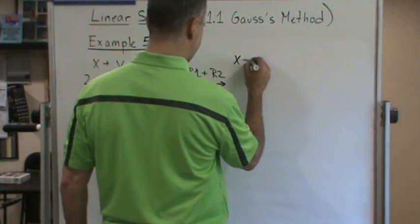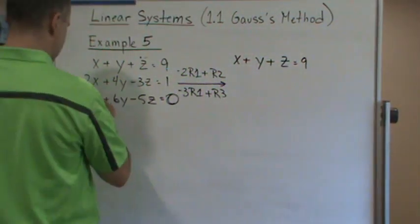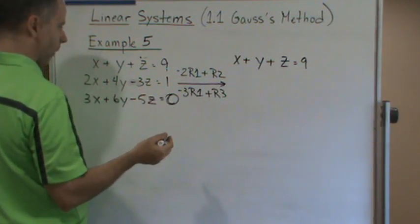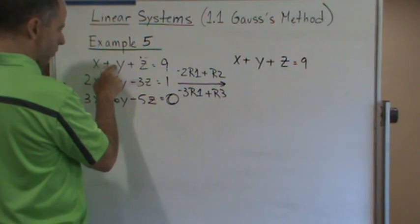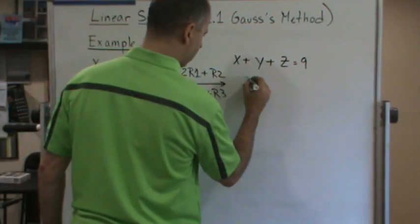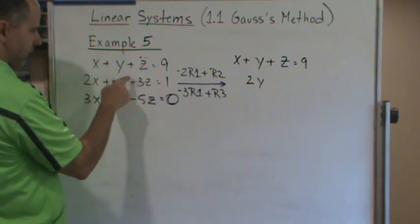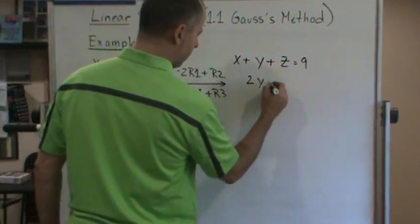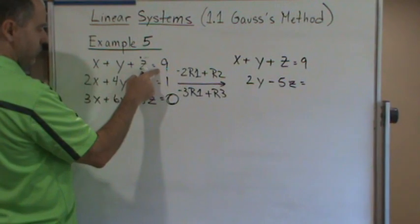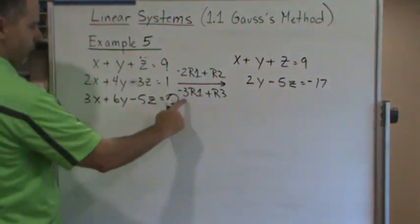Row one stays as x plus y plus z equals 9. The x terms in rows two and three go away by construction. For the new row two: negative two times y plus four y gives 2y; negative two times z minus 3z gives negative 5z; and negative two times 9 is negative 18, plus 1 gives negative 17.